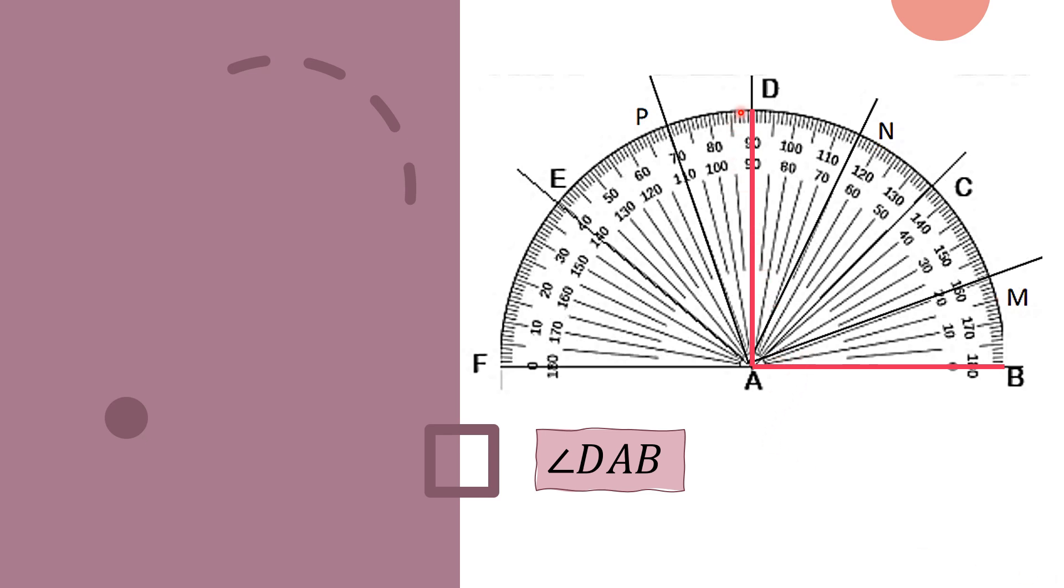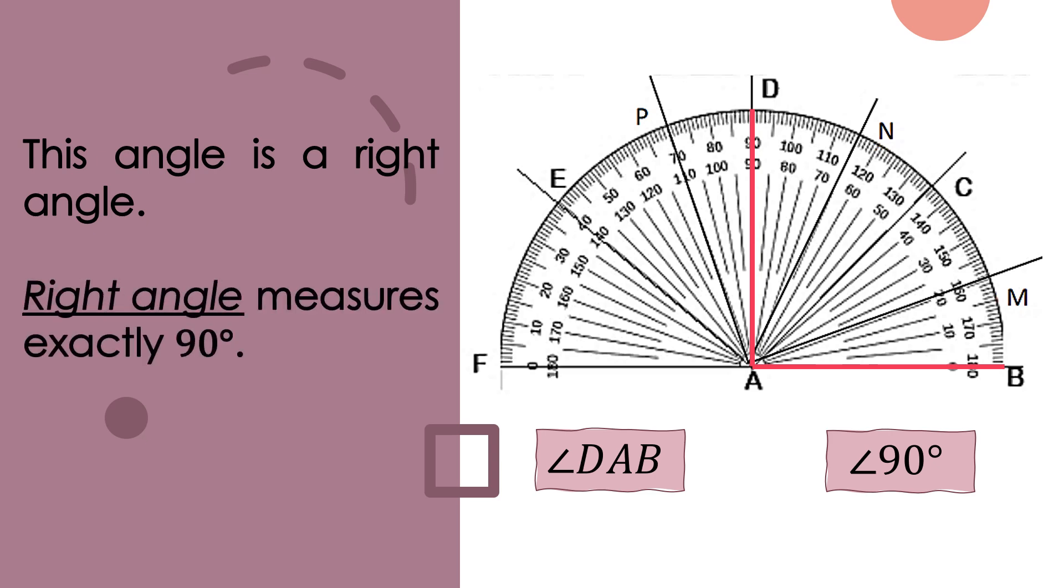As you can see, we measured or drew an angle which formed the letter L. It lies on exactly 90 degrees. So angle DAB has the measure of 90 degrees. This angle is a right angle. Right angle measures exactly 90 degrees.